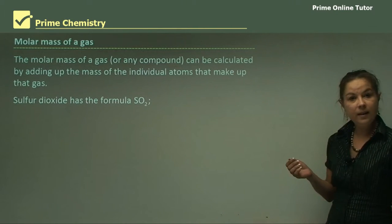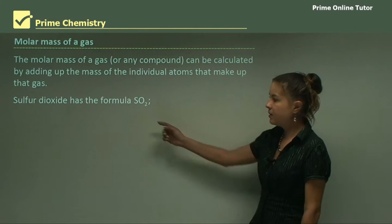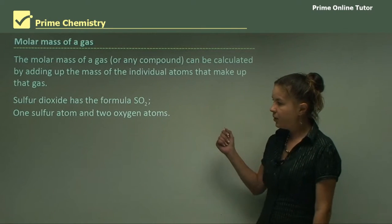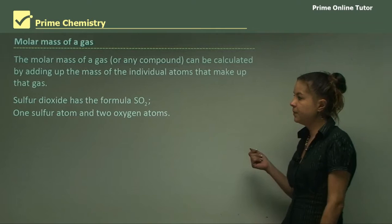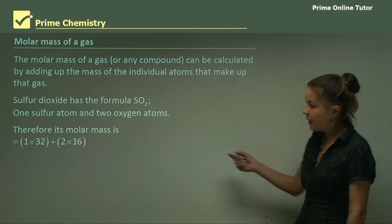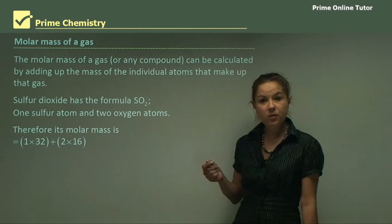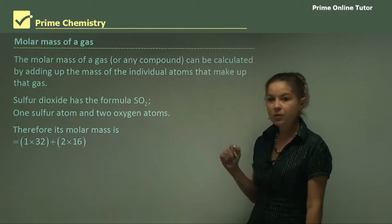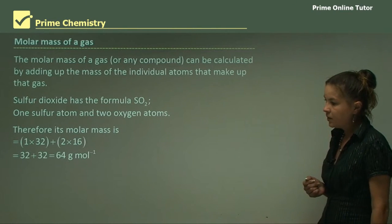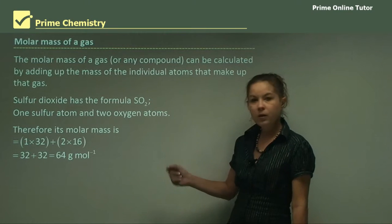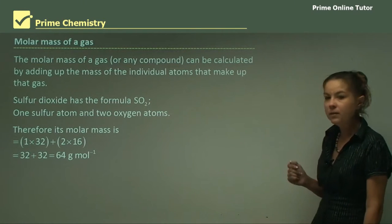So looking at an example, sulfur dioxide has the formula SO2. So there's one sulfur atom and two oxygen atoms. So therefore, its molar mass, if we add these up, will be 1 times 32, which is sulfur by itself, plus 2 times 16, which is 2 times oxygen. So what we find is that the molar mass is 64 grams per mole of sulfur dioxide.